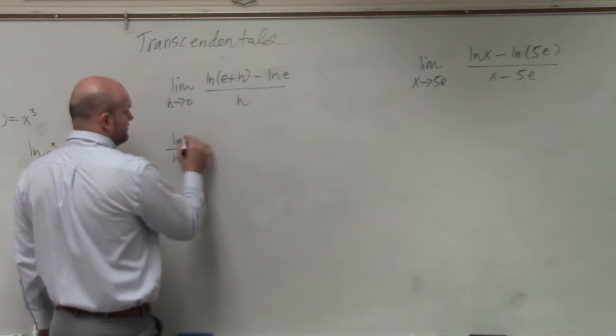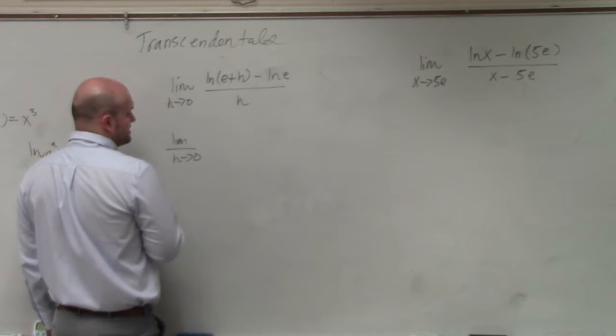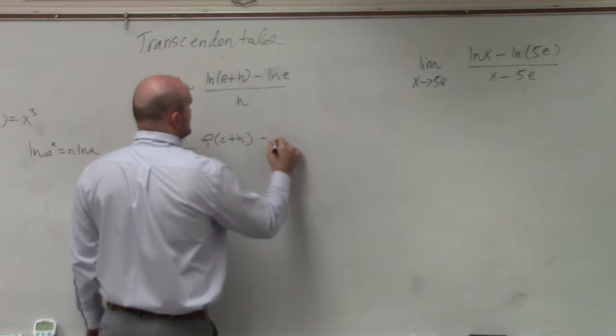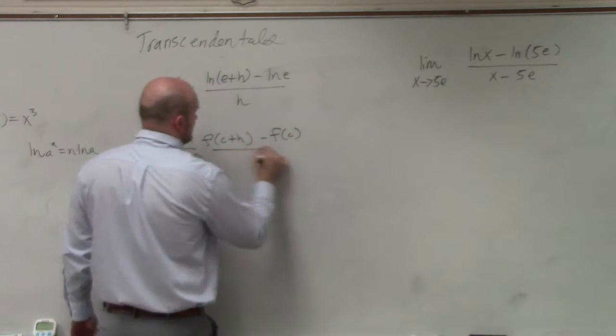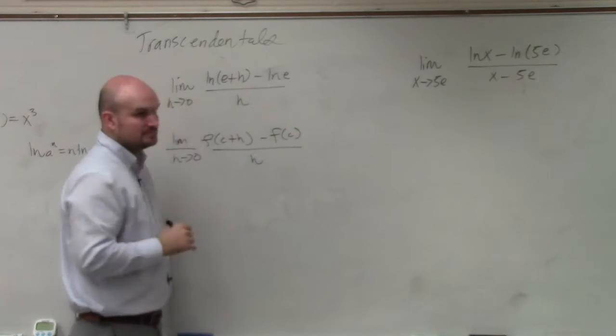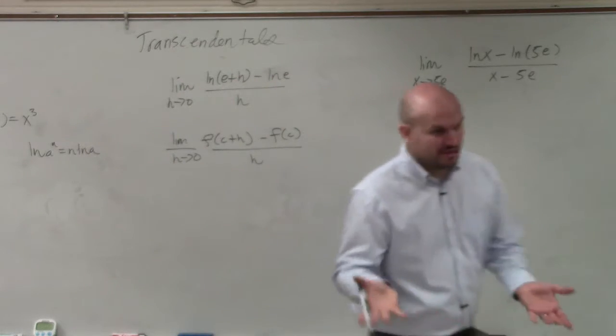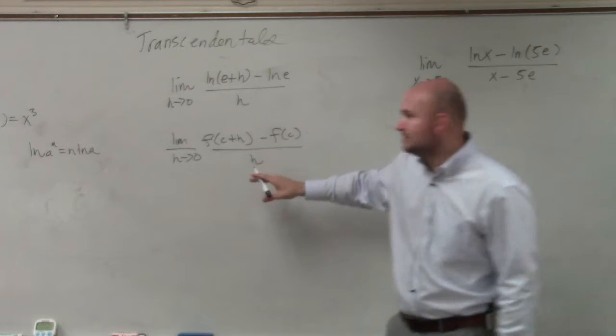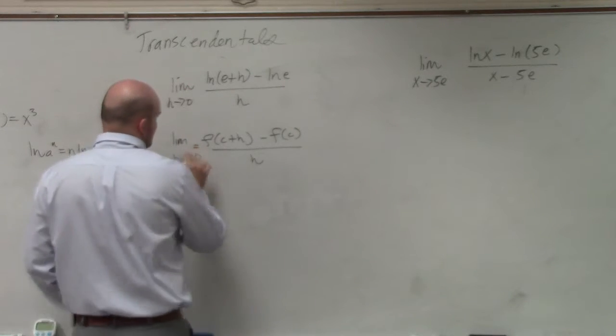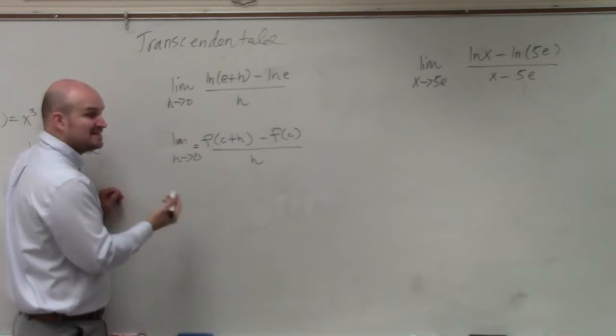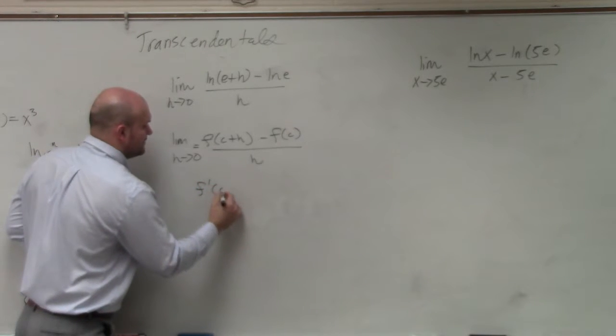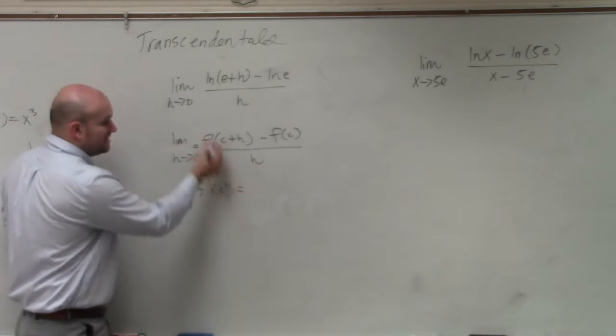So in this case, you guys remember the limit definition as h goes to 0: we had f of c plus h minus f of c all over h. That was the limit definition, the formula that I gave you guys. This is a limit definition of a derivative right here, and basically what that was saying is find f prime of c. That's really what this is asking.